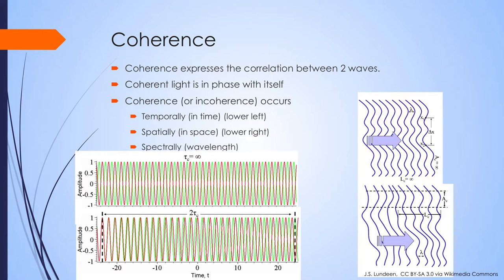Coherence of light expresses the correlation between two waves. Light which is coherent is in phase with itself, and light which is incoherent is not in phase. In these diagrams, the light at the top is in phase because the relationship between the two waves stays constant over time. The light at the bottom has a relationship that changes over time — that light would be out of phase or temporally incoherent. Light can also be spatially in phase or spatially out of phase, and it can be spectrally in or out of phase, meaning based on its wavelength.